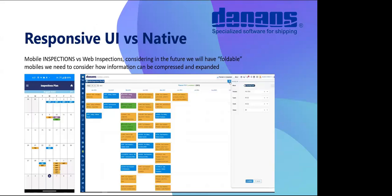This is a very important design consideration because doing something in a native interface for each device needs more programming resources. If I'm going to do an application only for web, I maybe need one or two programmers. If I also need it for mobile and something else in the future, I need more programmers. It's not easy for a small Greek company of 100 to 200 people to hire another 200 people just to have mobile applications. We also need to train the market because we have older users who expect the same full functionality on a small screen. So you have to find tricks to hide some information or show something else.